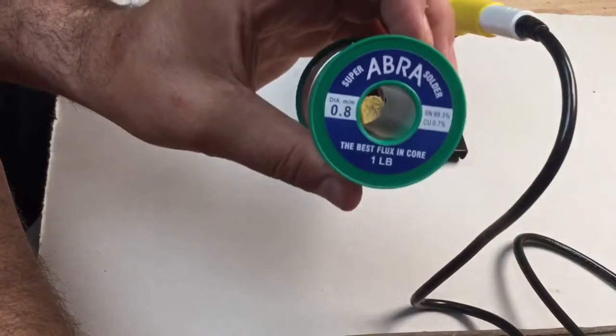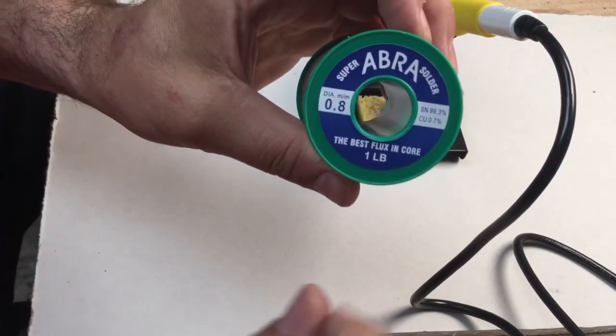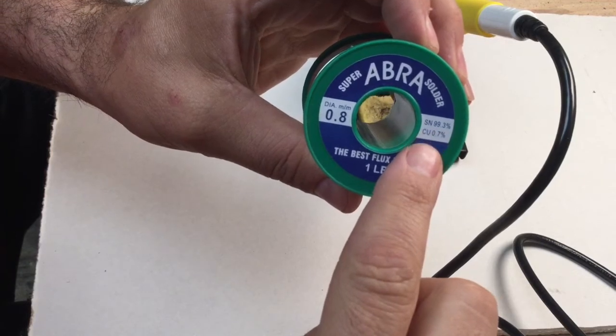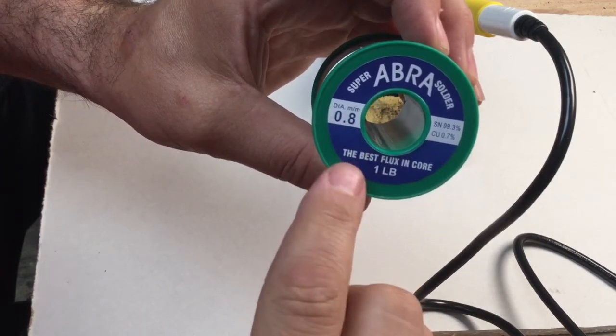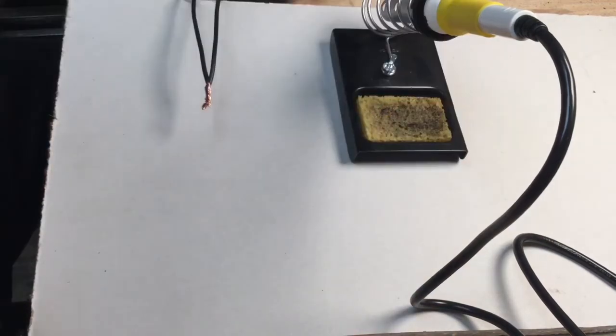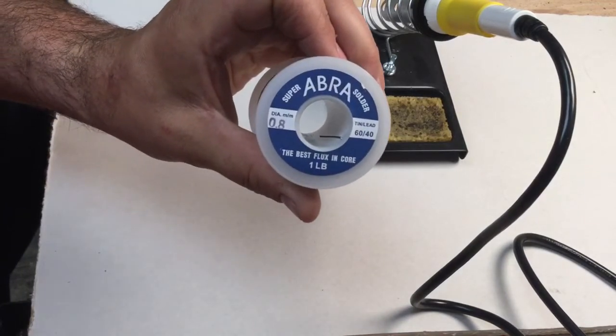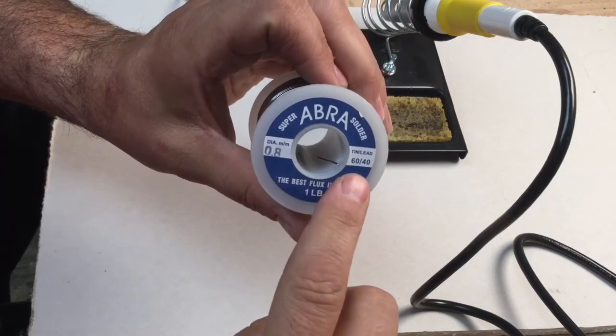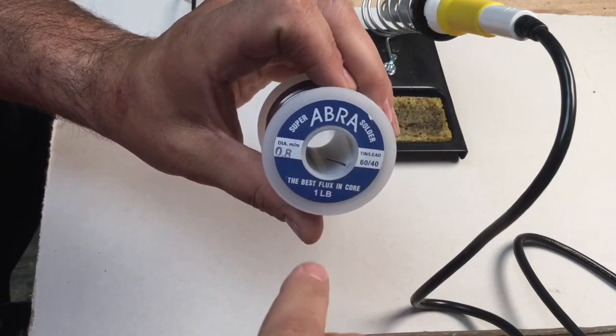Solder is an alloy of tin and lead, typically, but for our classes we will be using a lead-free alloy. As you can see here in this example, this will be a blend of tin and copper. This is a different type of solder to use, and if you look closely on the labeling, you will see the ratio of 60-40 with tin and lead.